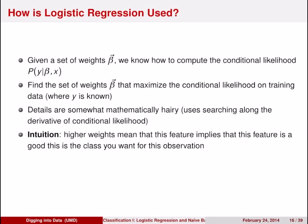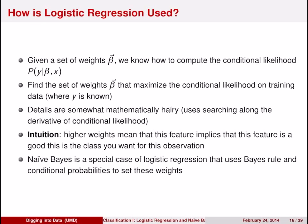Thus far, we've presented logistic regression by showing that given a set of coefficients, you know how to compute the conditional likelihood — the probability of y given some observed data and those coefficients. What we haven't talked about is how to find the values of those weights beta. The details are somewhat mathematically involved — it requires taking derivatives and gradients and then using gradient descent to find optimal values of beta that maximize the conditional likelihood. The intuition is that higher weights mean a feature is more important for a given class. Next we'll talk about Naive Bayes, which can be seen as a special case of logistic regression that uses Bayes rule and conditional probabilities to set the coefficients beta.